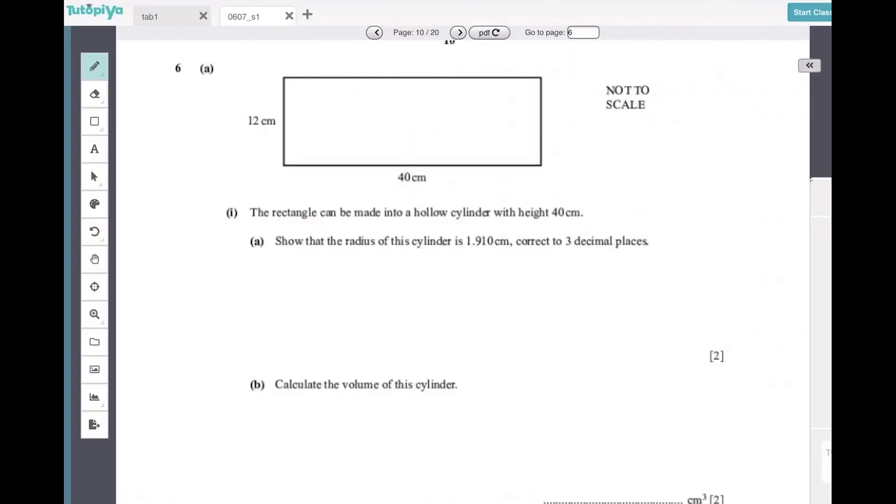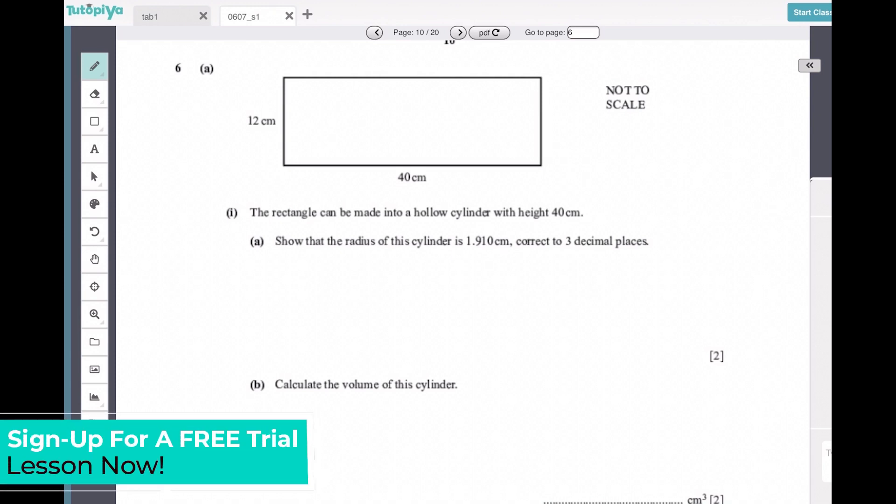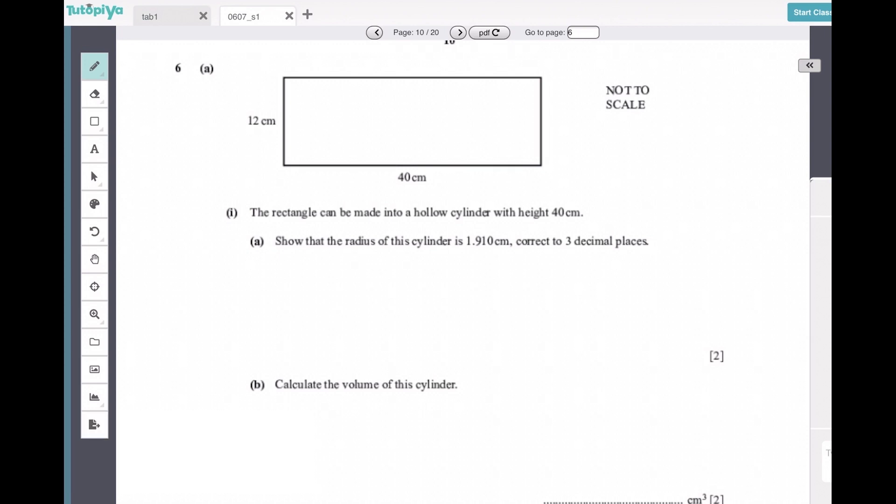Hello everyone, here we are with question number six. We're provided with the diagram of a 12 centimeter by 40 centimeter rectangle, which we now have to form into a hollow cylinder with height 40 centimeters. You have to kind of visualize that the rectangle is going to be twirled in this manner.